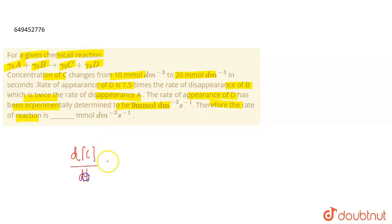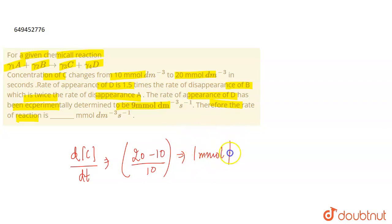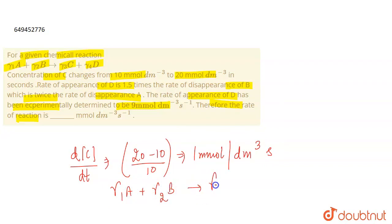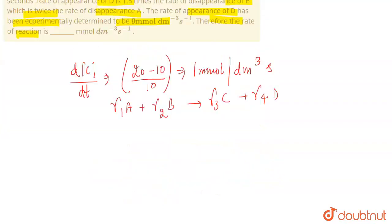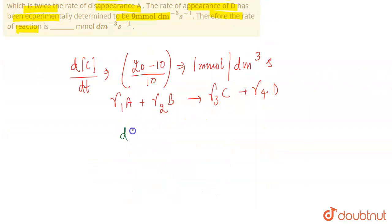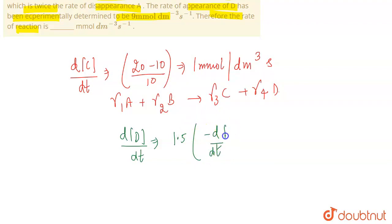Now, how much concentration of C will come? It is 20 minus 10 divided by 10, which equals 1 mmol per dm³ per second. Now, looking at the reaction γ1A + γ2B = γ3C + γ4D, the rate expression gives us 1.5 times minus dB/dt of concentration of B, which equals 9 mmol per dm³ per second.